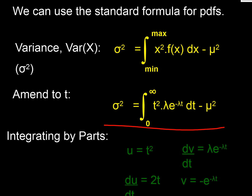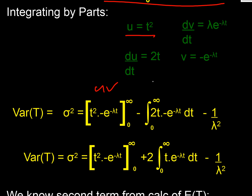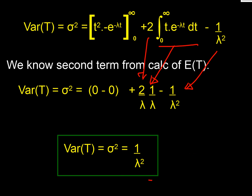We can find the variance using the same approach with the generalised formula. Integrating by parts again, this time with u equal to t squared, we need to go through a double integration. The inner integral turns out to be the same function we evaluated for the mean, so we substitute that result in. We end up with two over lambda squared minus one over lambda squared, and therefore the variance of t equals one over lambda squared.